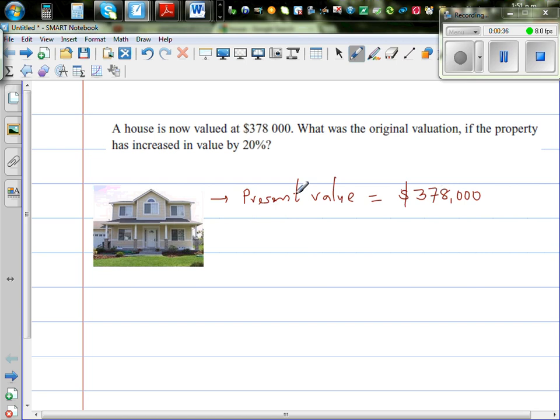Can we write this as a form of an equation? There was an original price plus 20% of the original price is equal to the present price, or present value. So this is the whole example in the form of an equation.